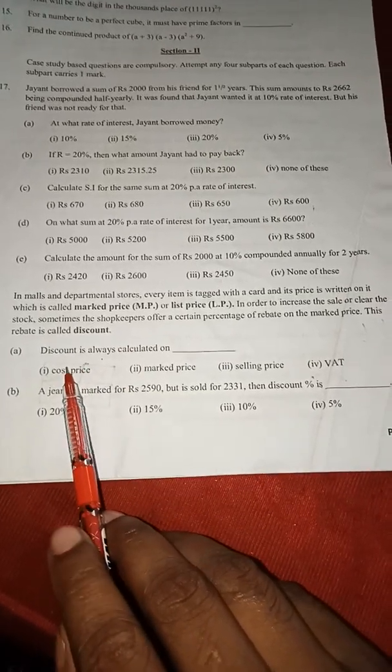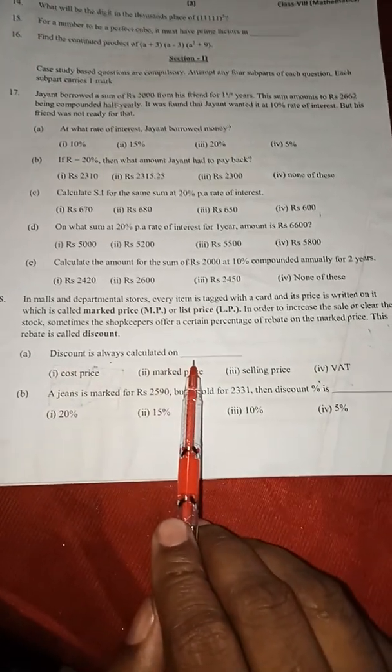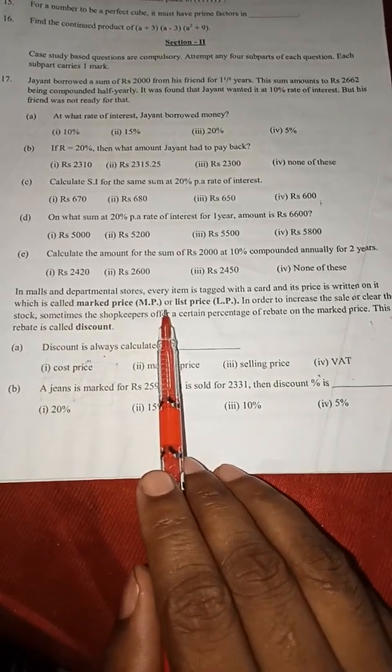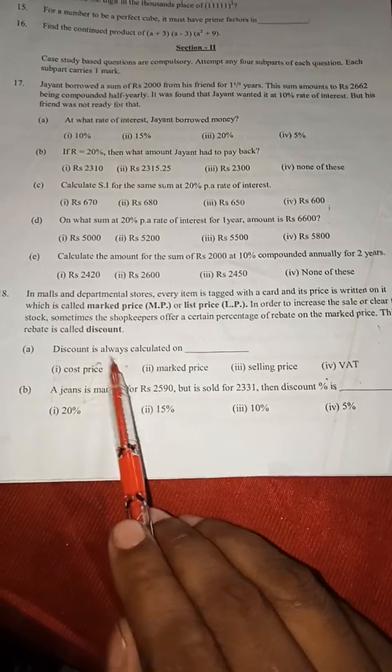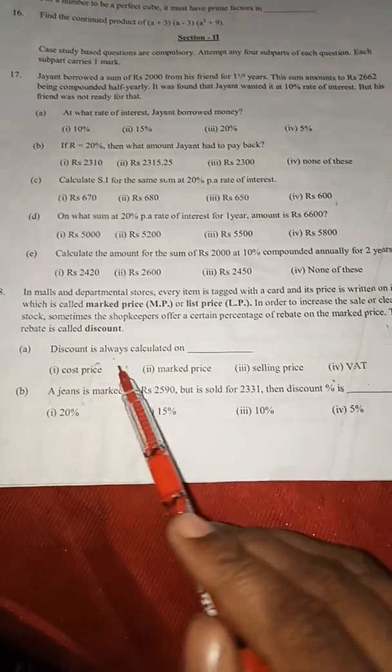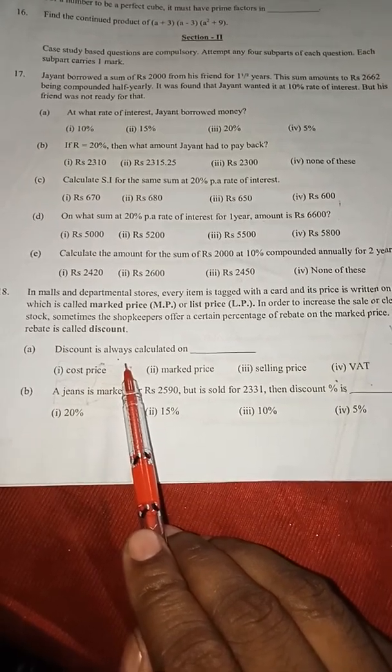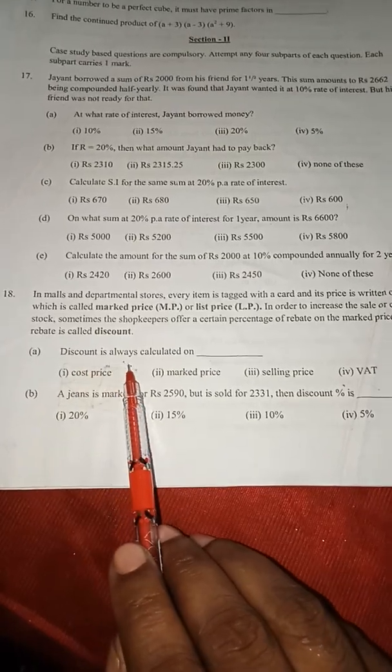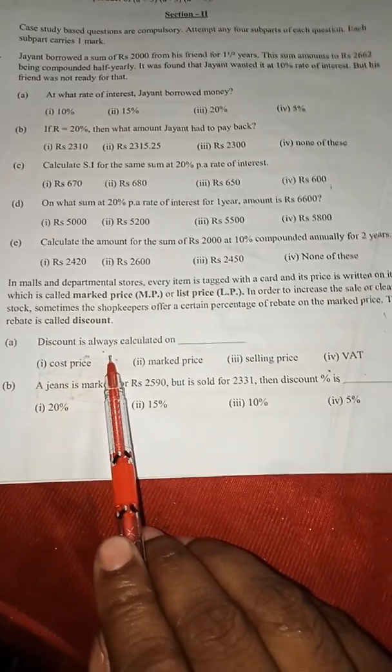Now, question given: discount is always calculated on what? Based on the passage, we also know that in chapters we have studied, just like if you find out the profit or loss percent based on the cost price, same way discount is always calculated on MP, marked price. So the answer will be marked price.